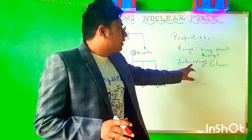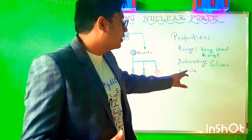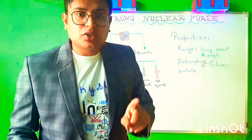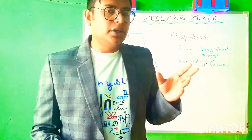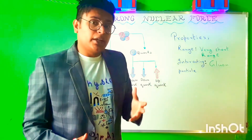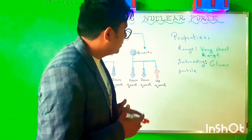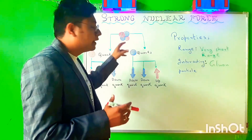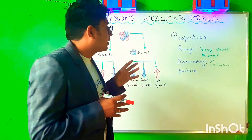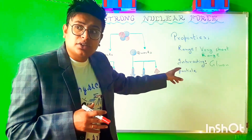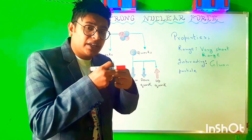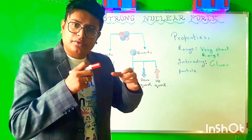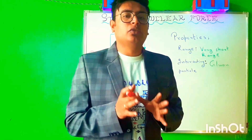The particle that mediates the interaction in case of the strong nuclear force is a gluon — just like in the case of gravity it was the graviton (though hypothetical), and in the case of electromagnetic force it was the photon. In the case of the strong nuclear force, it is the gluon that keeps the quarks and the nucleons together. The range of the strong nuclear force is very short: highly attractive when very close, and highly repulsive when a little apart. This is a brief introduction to strong nuclear force.